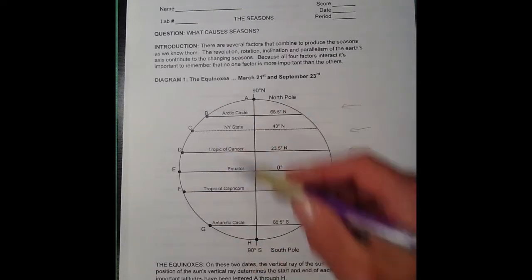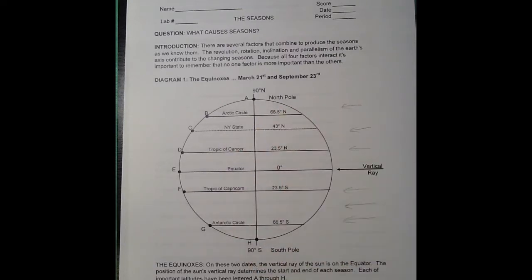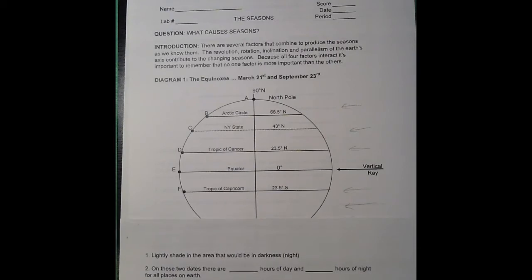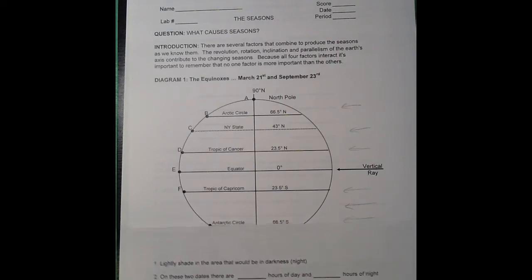You'll notice on the side that there are points A through H labeled, giving you the name and the latitudes for all of those locations. Now if you look at the back of the page, the directions say for number one: lightly shade in the area that would be in darkness or in night.